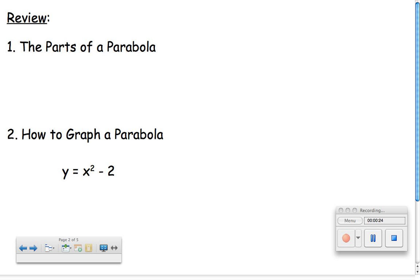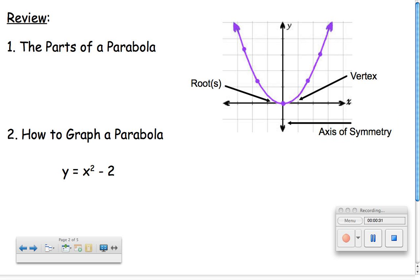Now, what I want to review with you before I go over to do that are two things. One are the parts of a parabola. Well, we know three parts of a parabola. We know a parabola has the roots, which is where it hits the x-axis, the vertex, which is its turning point. Notice in this example, the roots and the vertex are the same, and we also have that line in the middle that goes through the vertex, which is called the axis of symmetry.